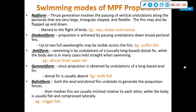Diodontiform propulsion is achieved by passing undulations down broad pectoral fins. Up to two full wavelengths may be visible across the fins — like puffer fish.